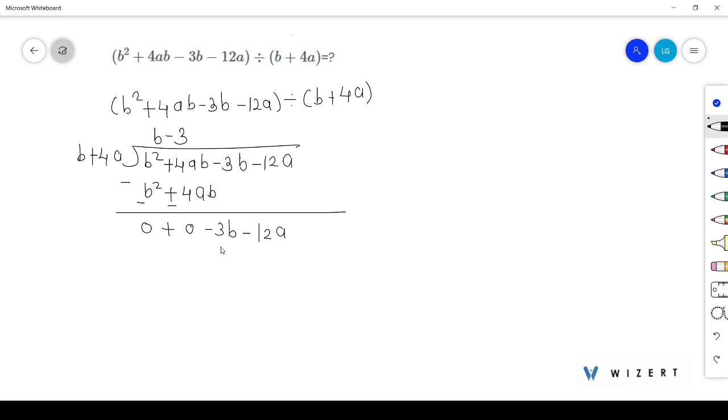So -3 into b is -3b. -3 into +4a will be -12a.